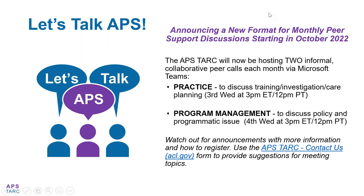Please join us for Let's Talk APS, our monthly peer support discussion. We host two informal collaborative peer calls each month: Practice, to discuss training, investigation, and care planning, which is the third Wednesday of every month at 3 p.m. Eastern, 12 p.m. Pacific Standard Time; and Program Management, to discuss policy and program issues, which is the fourth Wednesday of every month at 3 p.m. Eastern, 12 p.m. Pacific Standard. Reach out to us using the contact info displayed at the end of the webinar to join.